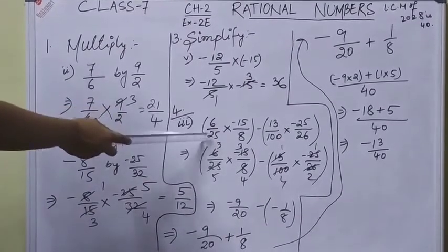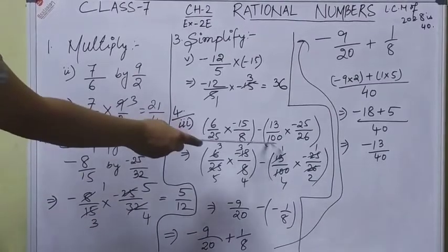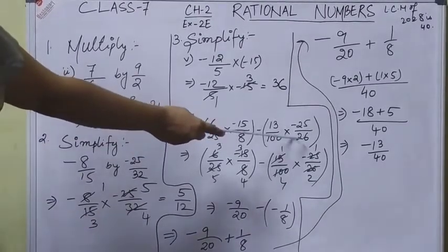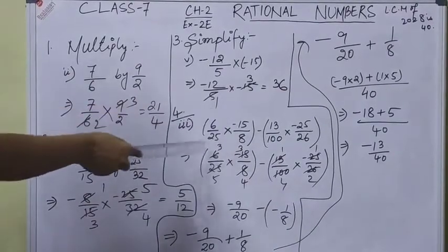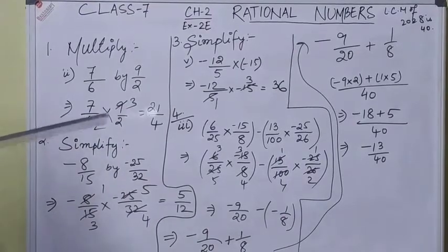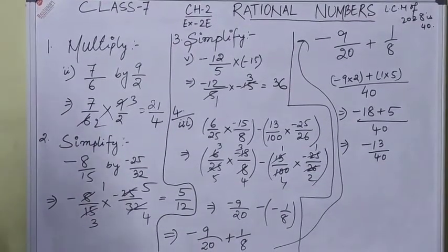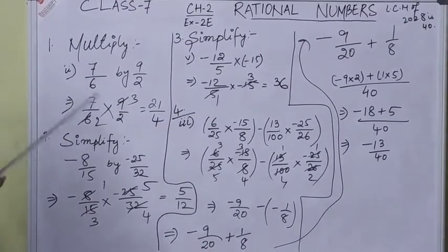Next question: 6/25 into -15/8 minus 30 into 100 into -25/26. First we will solve within the brackets, like in the BODMAS rule. You need to solve the values within the brackets and then operate with division, multiplication, addition or subtraction.